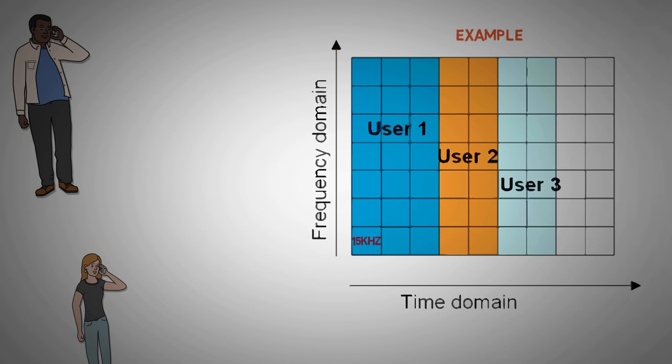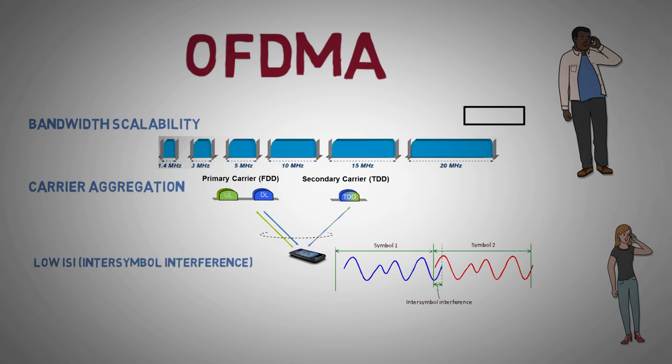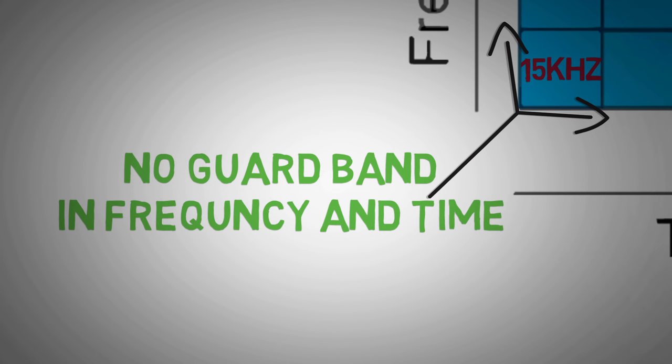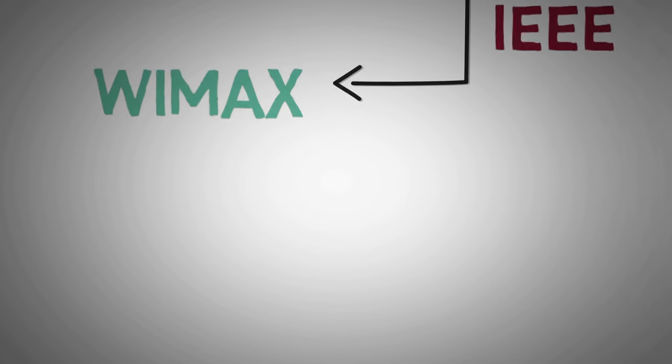Unlike FDMA or TDMA, OFDMA allows the users to access variable bandwidth depending upon the resource availability. Also, since these subcarriers are orthogonal, there are no guard bands between them. It was first introduced in Wi-Fi and subsequently in WiMAX by IEEE.